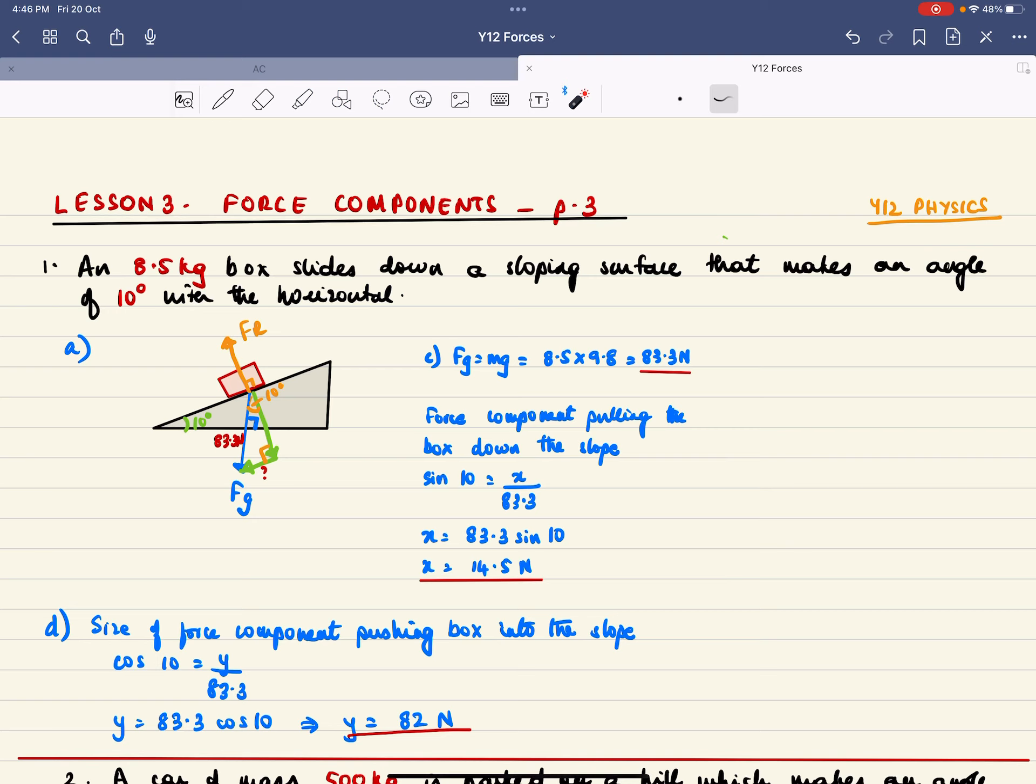An 8.5 kilogram box slides down a sloping surface that makes an angle of 10 degrees with the horizontal. So this is your surface and it makes 10 degrees with the horizontal.